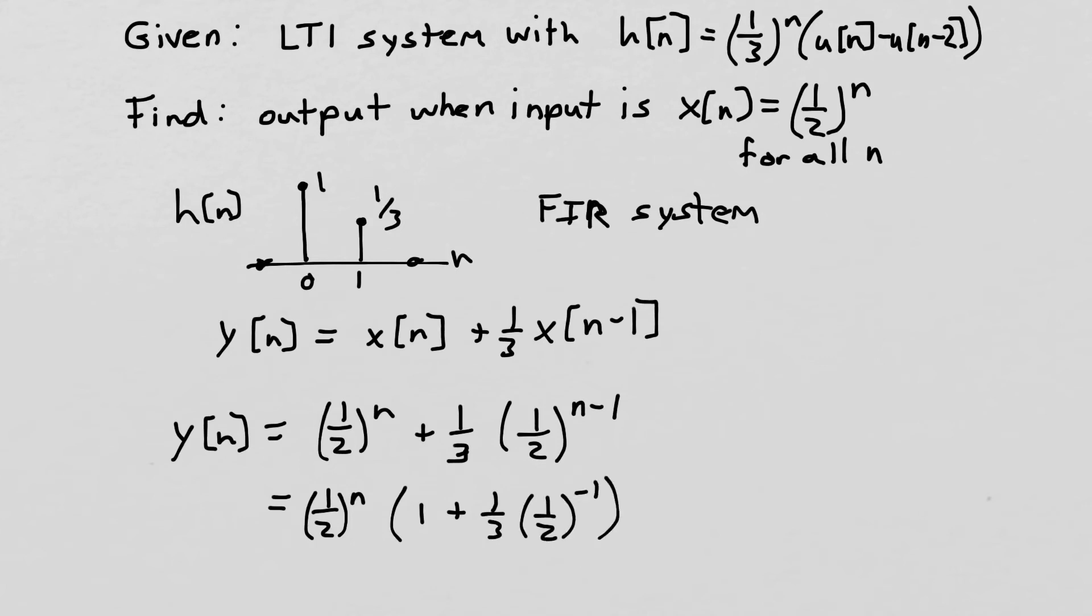So this is what happens to this equation when I pull out a half to the n. And now I can just rearrange this, because 1 half to the minus 1 is 2. So I can rewrite this. This will be a half to the n times 1 plus 2 thirds, or that's a half to the n times 5 thirds. So this is our final answer here, to what is the output of a system, of an LTI system with this impulse response when the input is a half to the n for all n. This is the output.